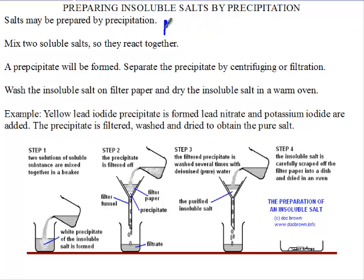So for example, we are going to have lead nitrate. This lead nitrate will react with potassium iodide, KI.